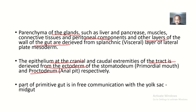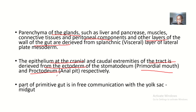The stomodeum is the primordial mouth, and the proctodeum is the anal pit. So the epithelium of the cranial parts of the gut is derived from the stomodeum — the primordial mouth — while the epithelium at the caudal extremities comes from the proctodeum, which is the anal pit.